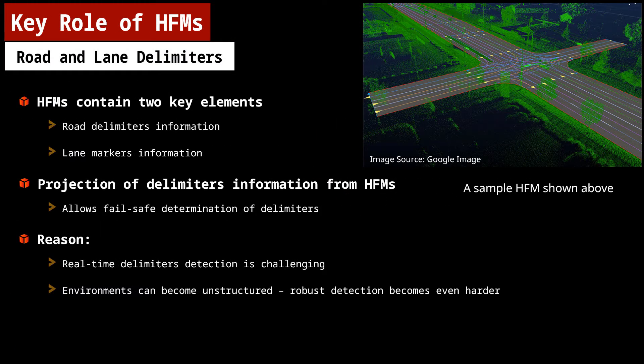A sample image here shows an HFM. Note that HFMs store road and lane delimiters — the key information points. HFMs store the 3D structure of the environment along with road delimiters, lane markers, and boundaries. Once a vehicle is positioned globally precisely, delimiters are projected on the vehicle's current position and configuration. This allows an autonomous vehicle to know where delimiters are even if the onboard algorithms fail to detect them, as delimiter detection is very hard and unstructured environments make it even harder. This is the key reason why global accurate positioning and projection model is used for autonomous driving.